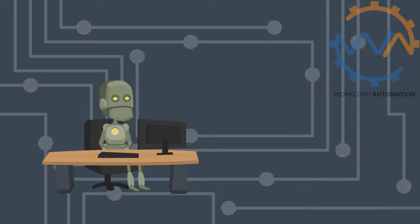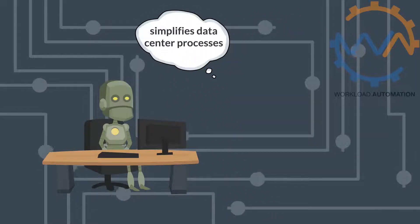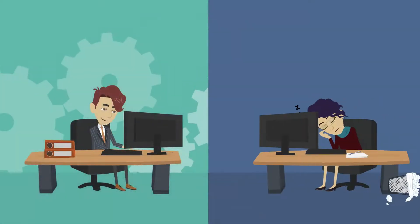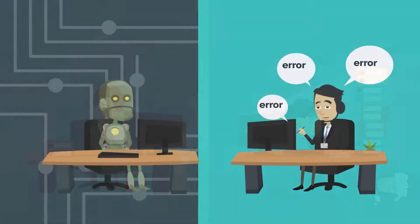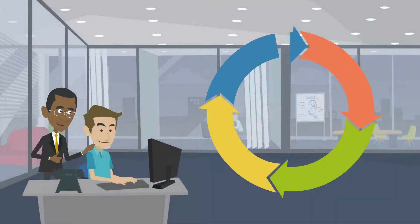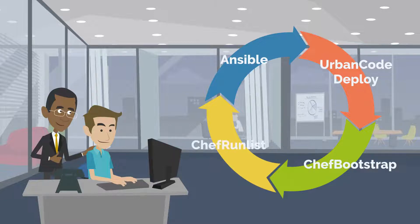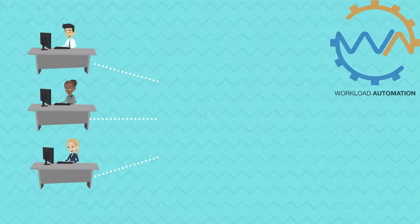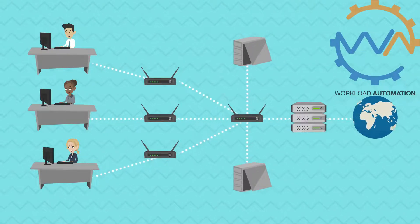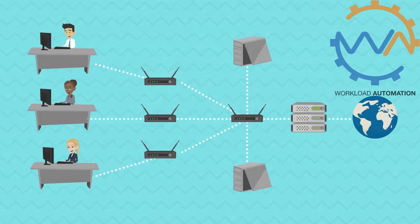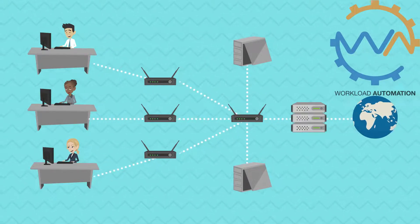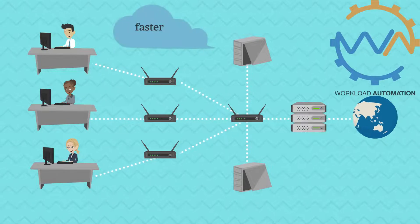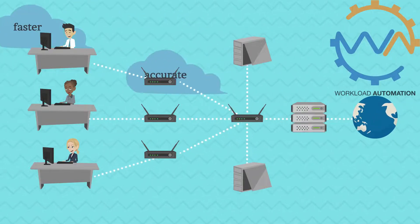Why should you choose Workload Automation? Many DevOps and provisioning tools help you simplify the Data Center processes, yet they are prone to human error and miscommunication. Automation integrates a number of applications like Ansible, UrbanCode Deploy, Chef Bootstrap, Chef Run List, and so on, which are used during different phases of the DevOps cycle. Once integrated, you can define an end-to-end automated DevOps process that spans across multiple disparate tools, resulting in faster, accurate deployment and releases.